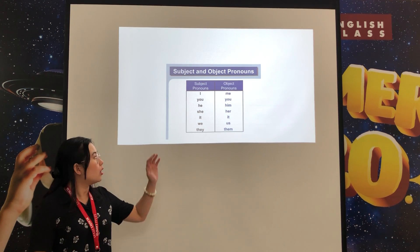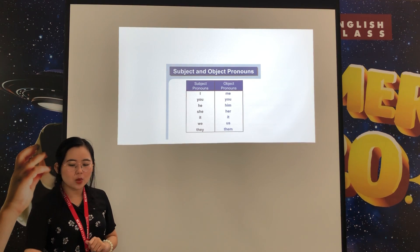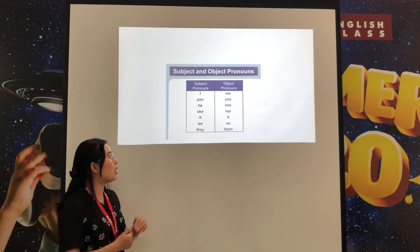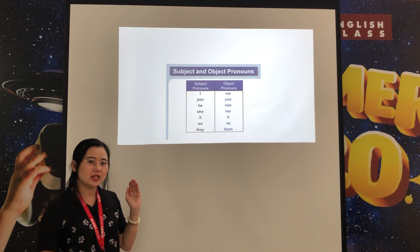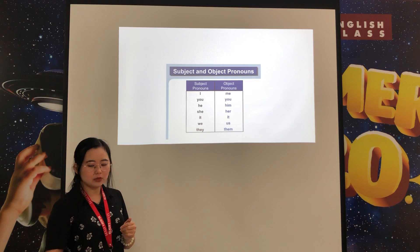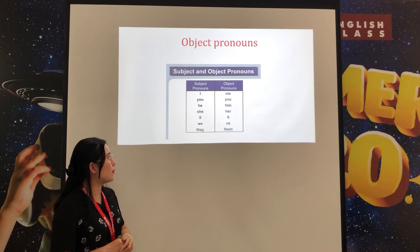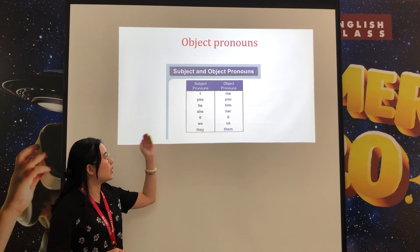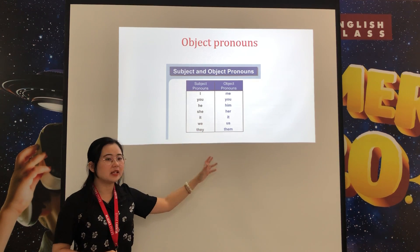Now, let's review one more time. So you already know we have these subject pronouns: I, we, you, they, he, she, it. And now we will talk about the object pronouns. The object pronouns are: me, you, him, her, it, us, them.